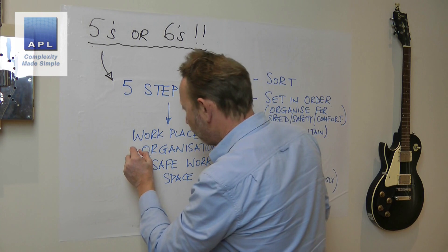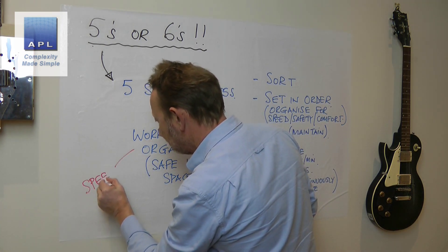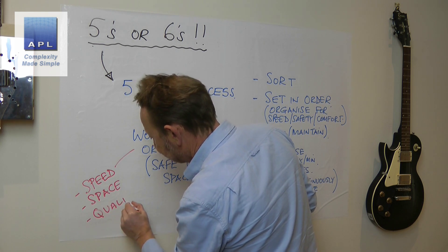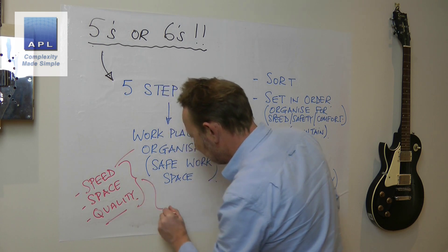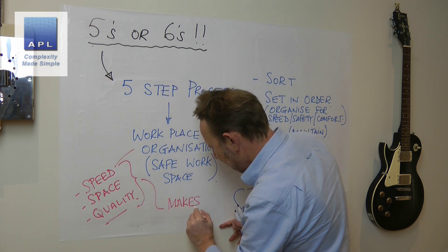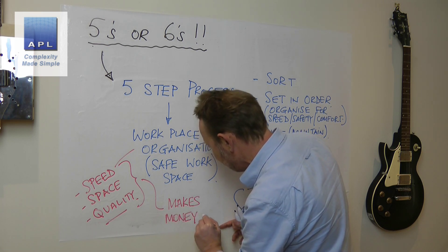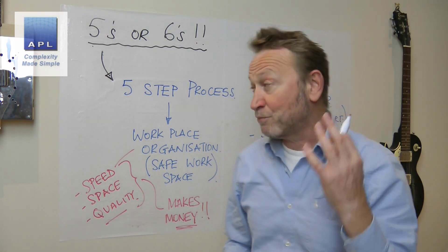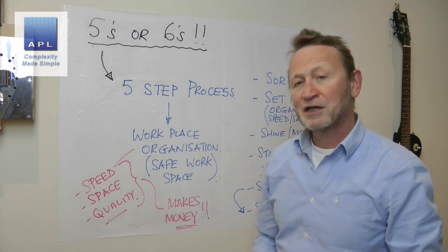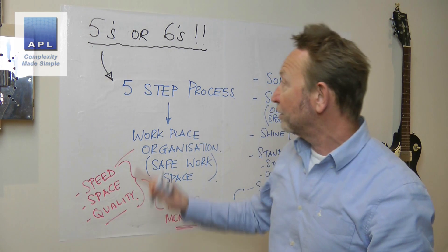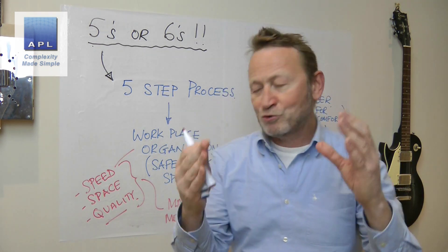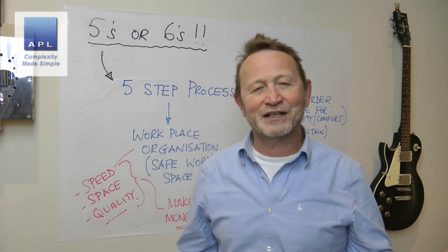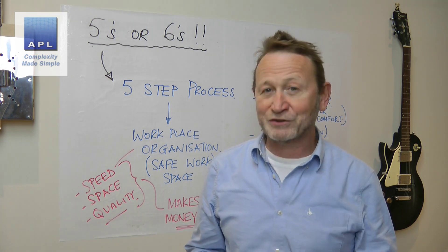5S delivers workplace organization. Workplace organization delivers speed, space, and quality. Another way to look at it: 5S makes money. It is not housekeeping. It is not six words in English that begin with S. It is a process — a five-step process that delivers speed, space, and quality. Please understand it, respect it, use it, make bucket loads of cash with a really safe environment, but don't add a sixth S when it isn't needed or wanted.